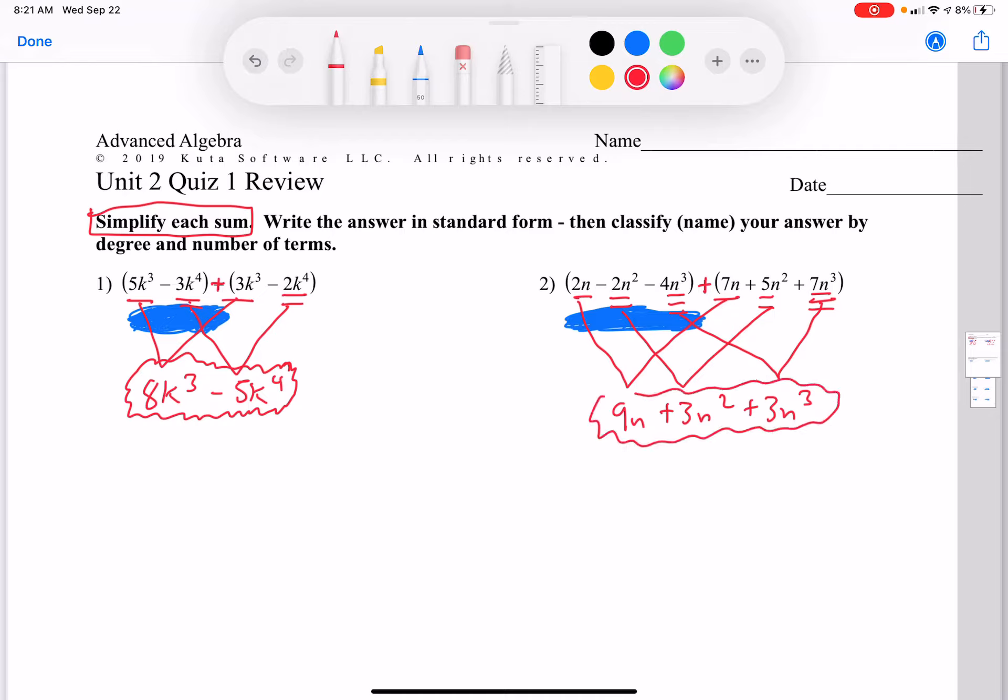This is a simplification step. First, now we need to write both of these answers in standard form. That's where the exponents go from biggest to smallest. So this is the biggest exponent right here, so it should come first.